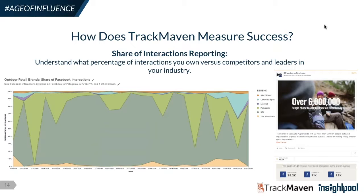REI has done a great job building out their own influencer network with climbers, sport fanatics, and athletes in the various sports they create gear for. In their thank-you post on Facebook, REI had over 6 million people participate in their Opt Outside campaign this year, and that post had thousands of reactions and shares. The value of this share of interactions report is clear: you can see what percentage of the conversation on any channel your brand owns. If I were the REI marketing team, I'd use this report to show that not only was the campaign hugely successful from an audience participation standpoint, but it also effectively drowned out all competitors across this period.